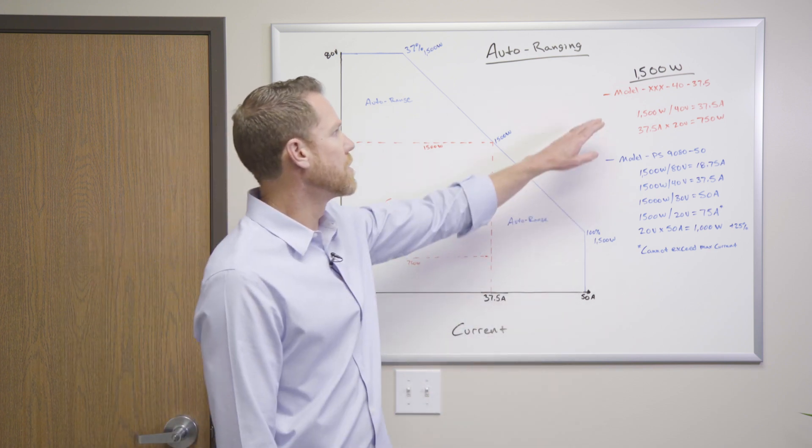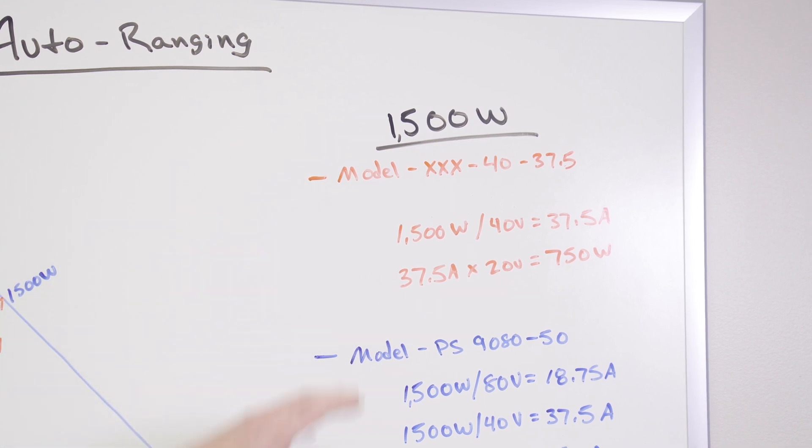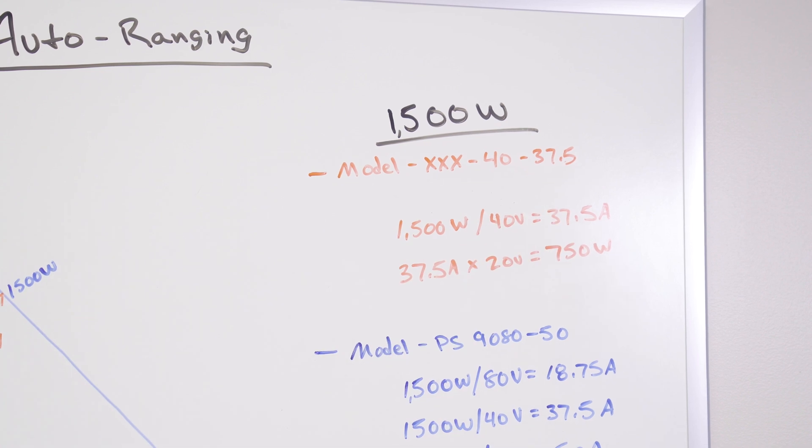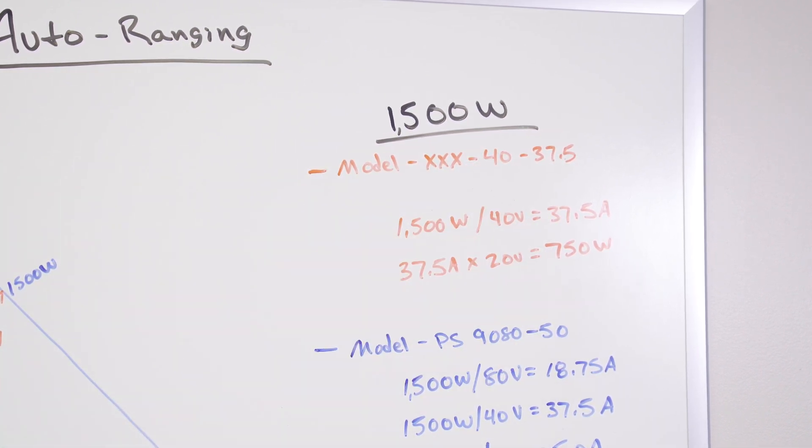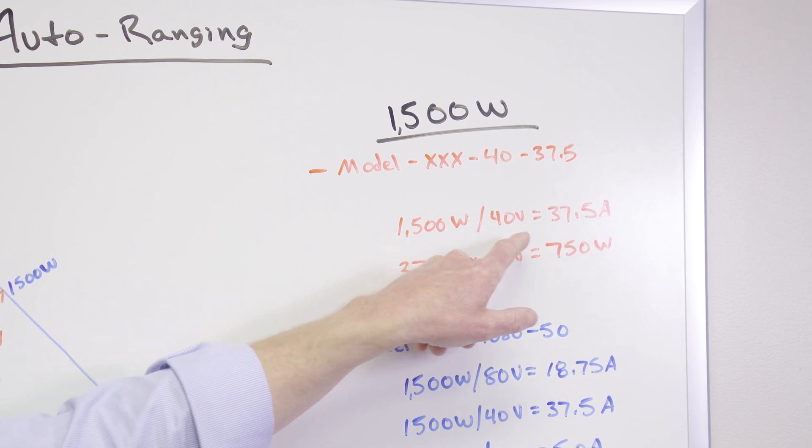So let's take a look at a specific example. So you have a 1500 watt power supply, whatever the model is, typically you have voltage, then available current. So for this particular model, I've selected a 40 volt, 37 and a half amp. So you can see at 1500 watts, 40 volts, you're getting the 37 amps. That's this point here.